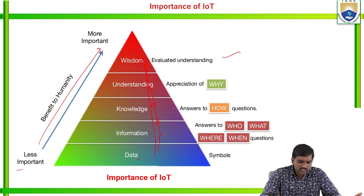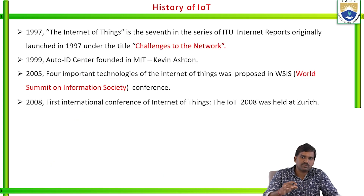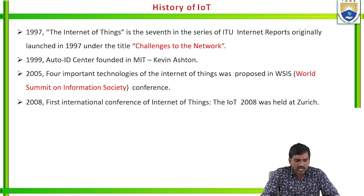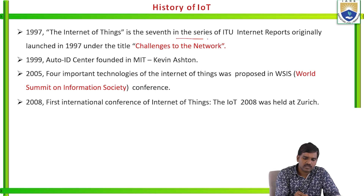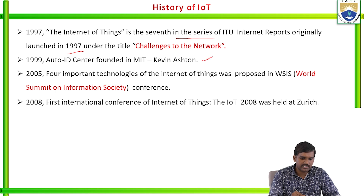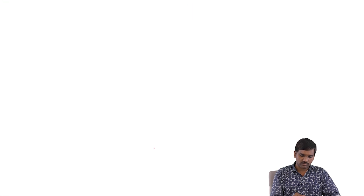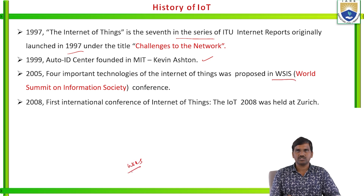This answers how information is stored in the devices and covers who, what, where and when the signal is. Here are some history points of IoT: in 1997 the origin of IoT came into force by scientist Kevin Ashton. It was the seventh in the series of ITU internet reports originally launched in 1997 under the title 'Challenges to the Network.' In 1999, the RFID center was founded at MIT by Kevin Ashton. In 2005, four important technologies of the Internet of Things were supported at the WSIS — World Summit on Information Society conference.